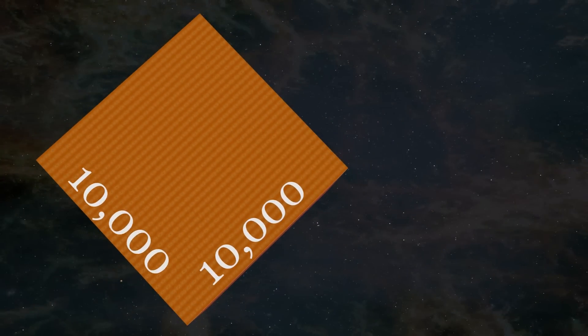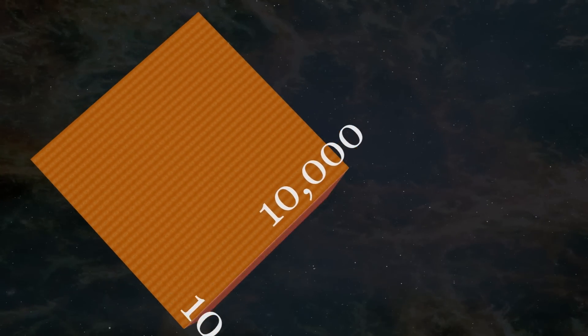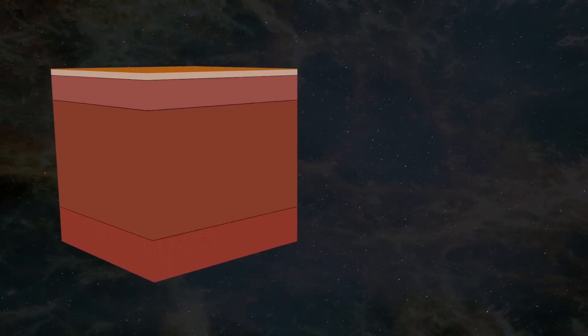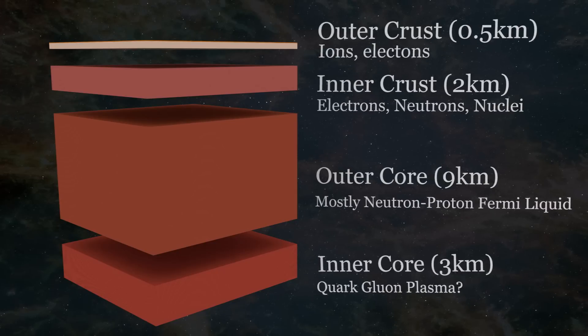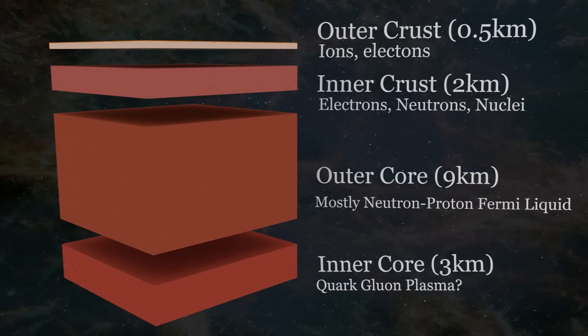Neutron stars are very small, some just around 10 kilometers across. Recreating that diameter in Minecraft gives us a world about 10,000 blocks wide. This means it only takes 25 maps to fully explore its surface.